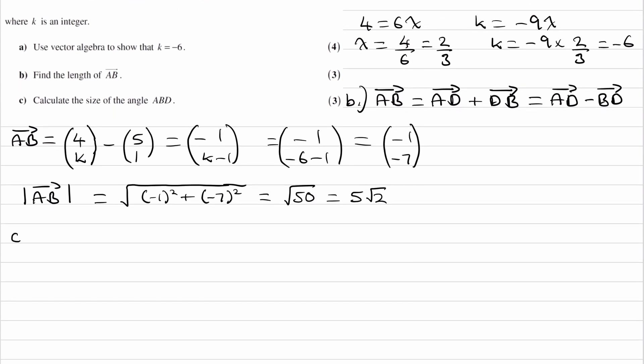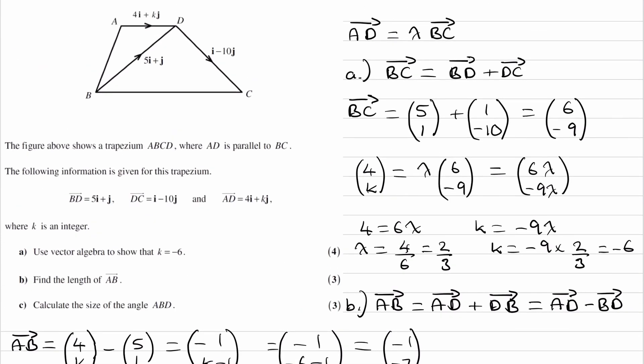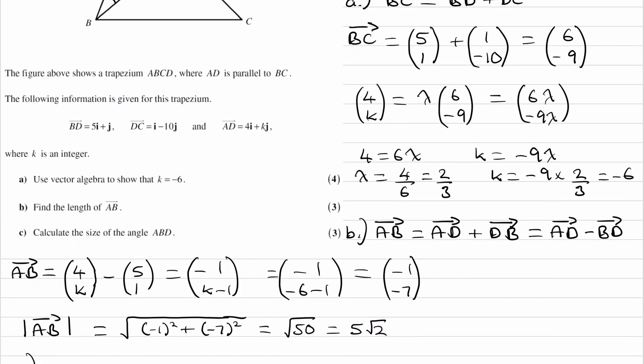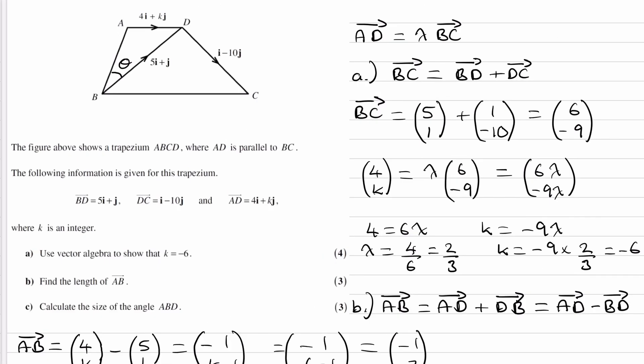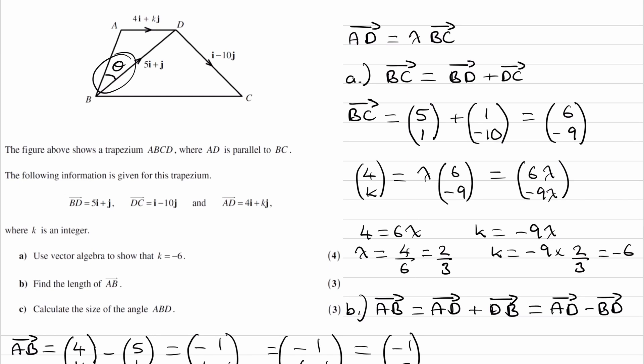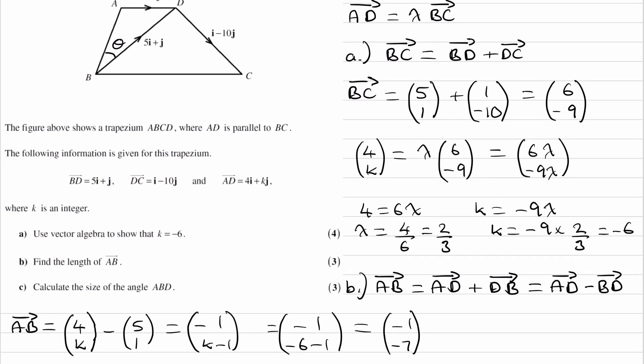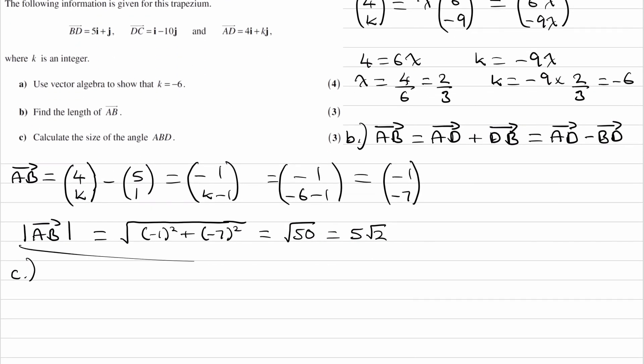For part C, we want to work out the angle ABD. So let's go up to this triangle. We want to work out the angle ABD, which is this one here. So B is in the middle of these three letters. Therefore, it's the angle next to B that we're trying to work out. This one. So to do that, we want to work out what the lengths of all of the sides are, and then use the cosine rule.